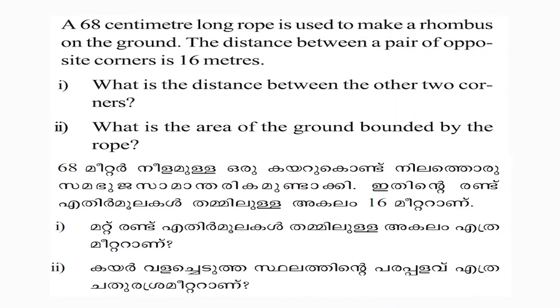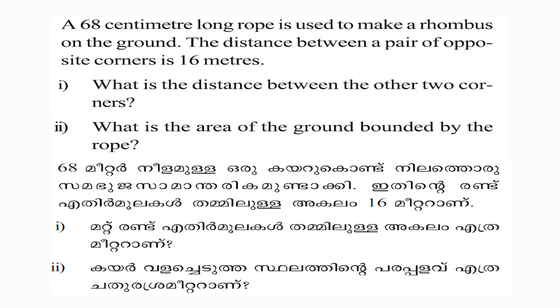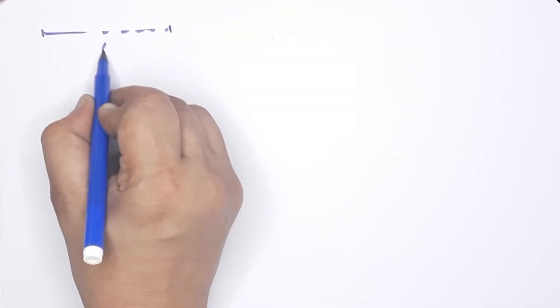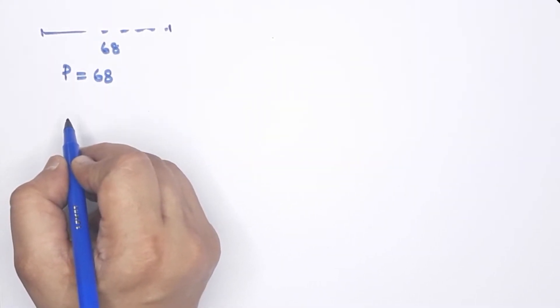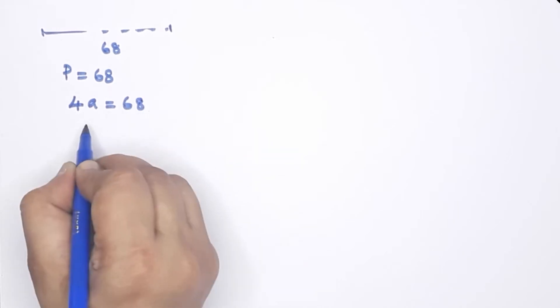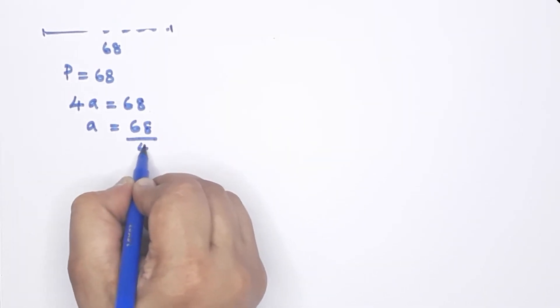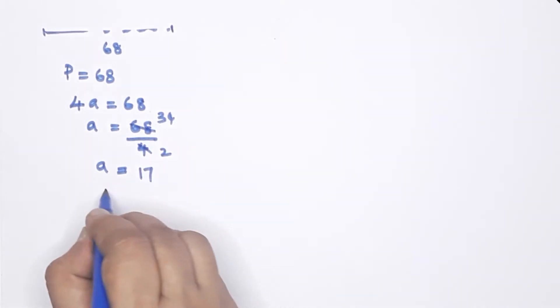Next question. A 68 centimeter long rope is used to make a rhombus on the ground. The distance between a pair of opposite corners is 16 meters. Since it is a rhombus, all four sides are equal. The perimeter is 68, so each side = 68 / 4 = 17 centimeters.